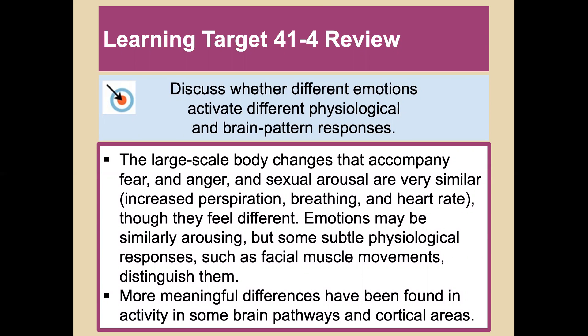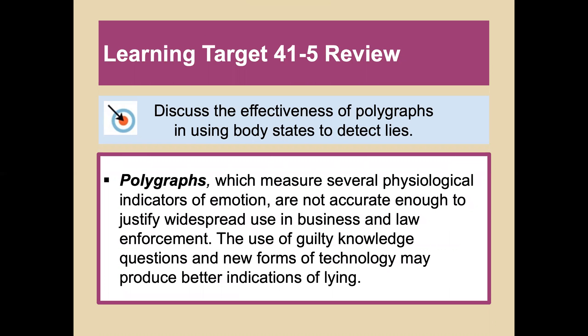Though fear, anger, and sexual arousal feel very different, they are similarly arousing physiologically. More meaningful differences have been found in brain pathways and cortical areas. Polygraphs, which measure physiological indicators of emotion, are not accurate enough to justify widespread use in business and law enforcement; guilty knowledge questions and new forms of technology may produce better indications of lying.